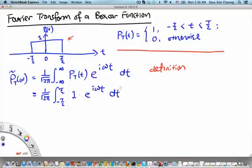Now, this integral, of course, we can evaluate very easily. This is 1 over square root 2π. e^(iωt), where we integrate it, we get e^(iωt) divided by iω.